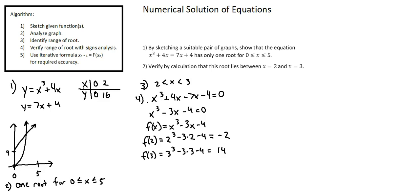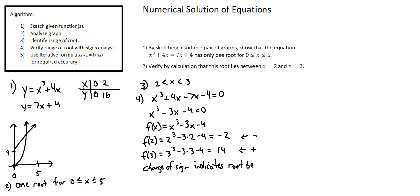Step 4: verify range of root with signs analysis. That's where we set everything equal to 0, and we're working our way down through that process. Notice the first result has a negative value as an output and the second result has a positive value as an output. That sign change indicates the presence of a root between 2 and 3. A change of sign indicates a root between 2 and 3. Step 5 doesn't apply to this example — we're not asked to improve the accuracy of our answer.